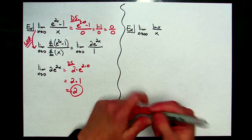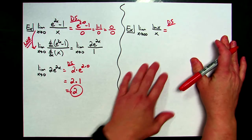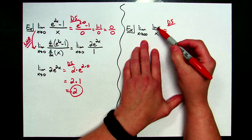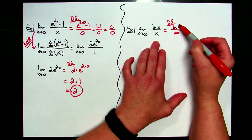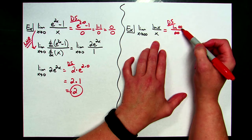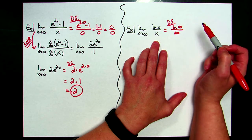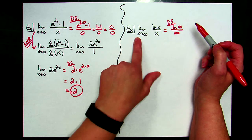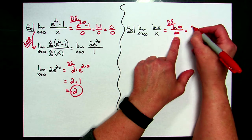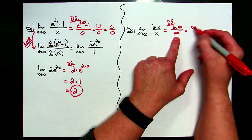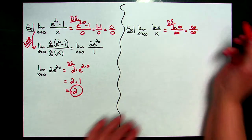Let's do another example, this time as x approaches infinity, because it works going either way. The limit as x approaches infinity of ln(x) over x. Direct substitution: the natural log of infinity all over infinity. It might be hard to see what the natural log of infinity is approaching, so if you need to, put natural log of x in your calculator, go to your table of values, let x get really large approaching infinity, and that will indicate it goes to infinity. So I have infinity over infinity — L'Hôpital's Rule.